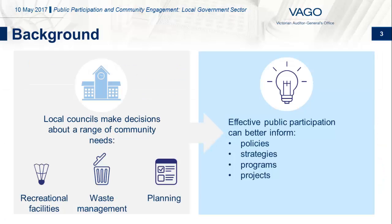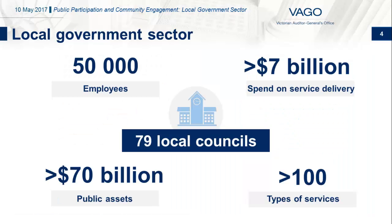Councils make decisions about a diverse range of community needs. To cater for these needs, effective public participation can help to better inform local government policies and their translation into effective strategies, programs and projects. Victoria's councils are supported by Local Government Victoria, which is part of the Department of Environment, Land, Water and Planning (DELWP). LGV works cooperatively with councils to ensure Victorians benefit from responsive and accountable local government.